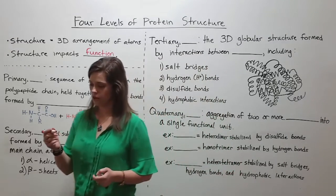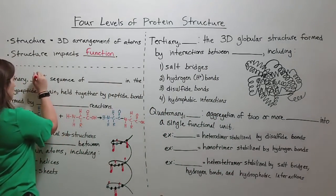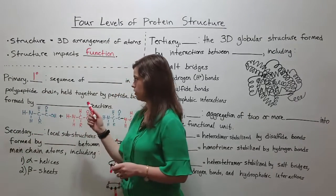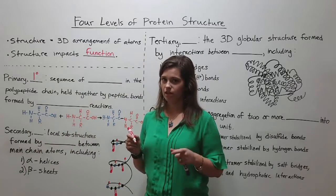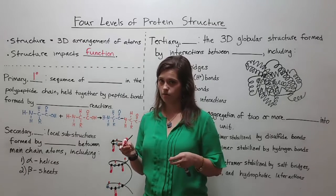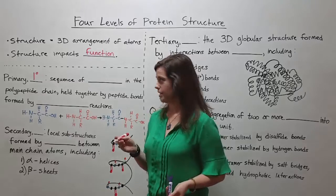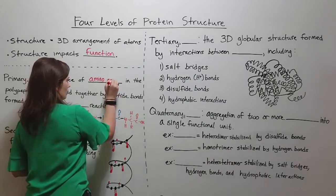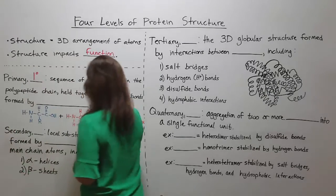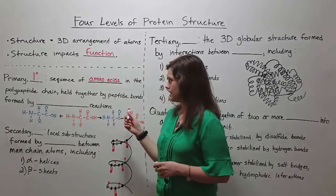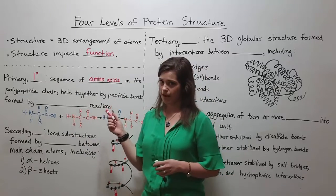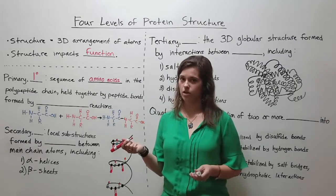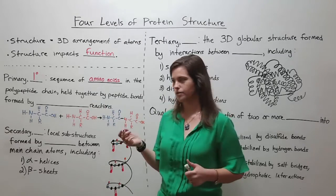Primary structure is often abbreviated as 1° — that's a way that you can abbreviate it in your notes. Primary structure refers to the sequence of amino acid monomers along the polypeptide chain. These amino acids are held together by peptide bonds that are formed by a kind of reaction called a dehydration reaction or a dehydration synthesis reaction.